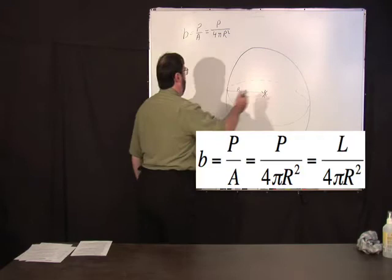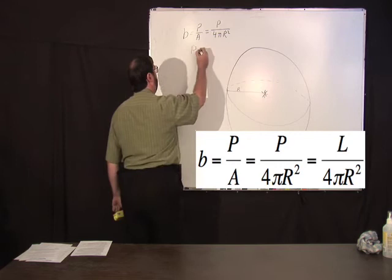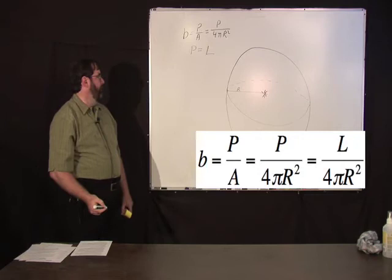What is the other thing is this power in watts, the total power radiated in watts P. Astronomers call that luminosity. They use the symbol L.